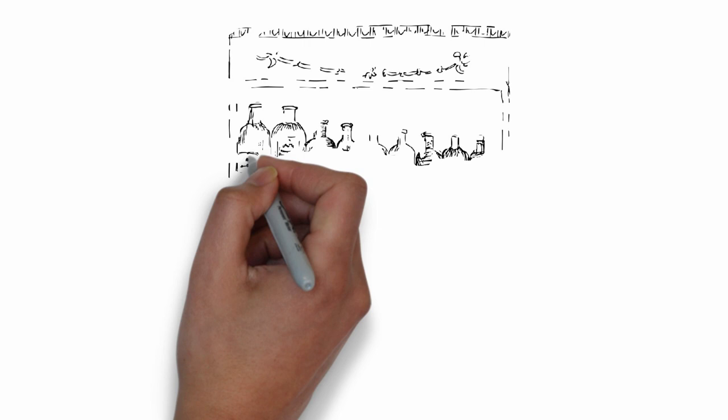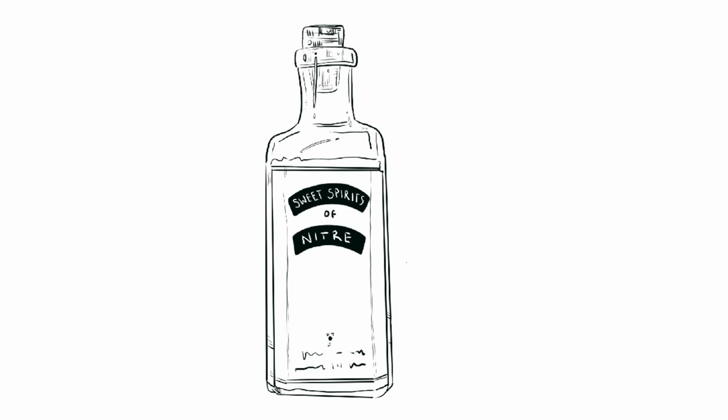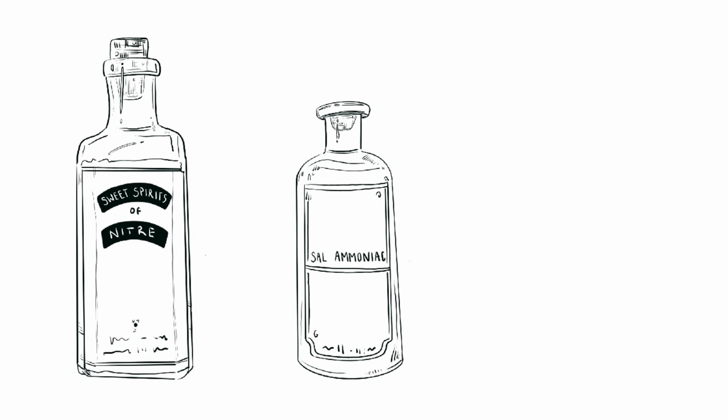The long rows of ornate glass bottles with the carved stoppers and Latin inscriptions would not stand on the dispensary shelves much longer. And their names, dearly familiar for many generations—sweet spirits of nitre, salamonia, tincture of camphor—would be lost and vanish forever.